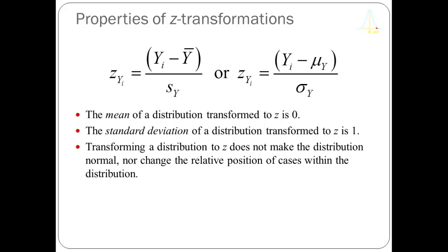It's still the same temperature outside — just in one scale it's expressed in centigrade and in another in Fahrenheit. The primary outcome of this operation is to create a new variable that has a mean of 0 and a standard deviation of 1.